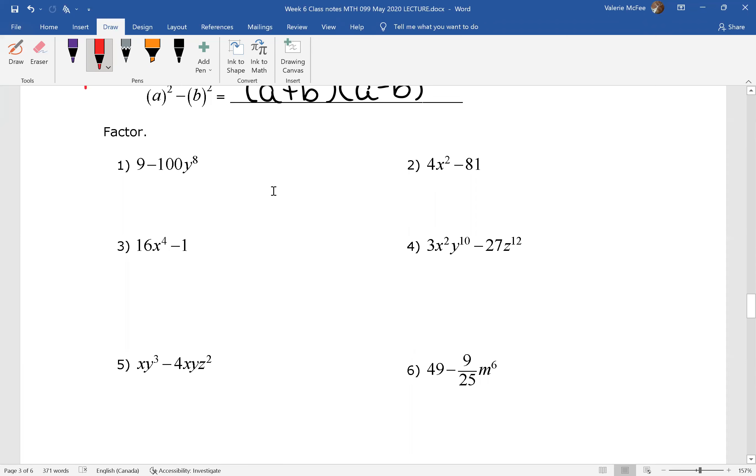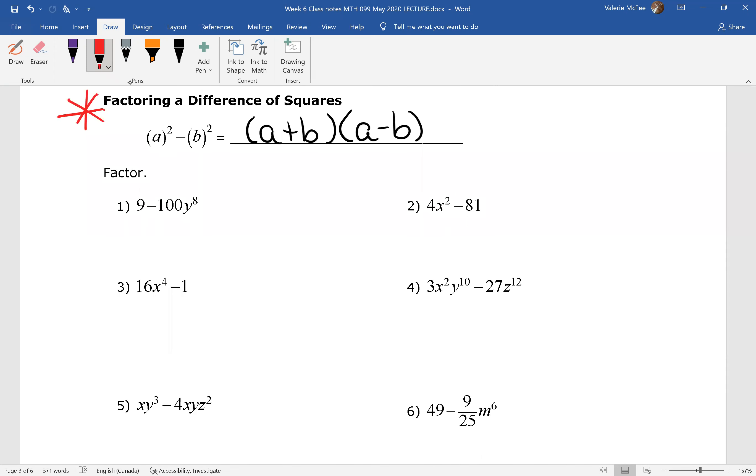So we want to factor using this formula. I'm going to suggest that the first step is to write it in this form. That way we can find a and b. So for question 1, we have 3 squared minus 10y to the power of 4 all squared. We know a and we know b. So now we can write this in factored form. a plus b times a minus b.